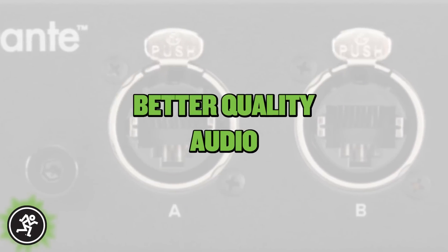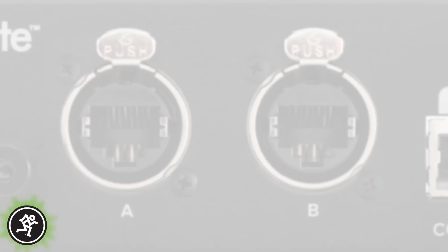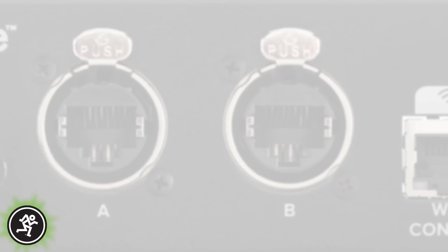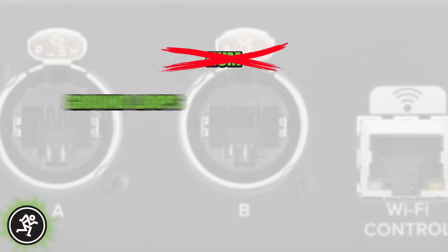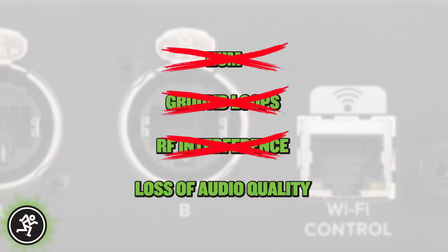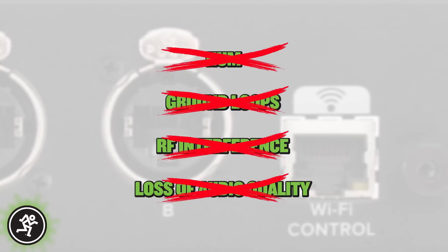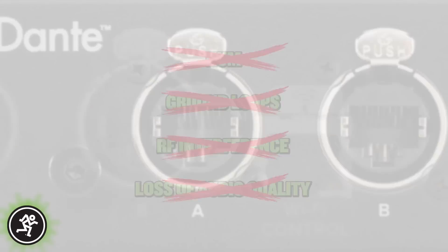First, Dante digital audio networks sound better, as networked audio doesn't suffer from hum, ground loops, RF interference, or loss of audio quality often associated with analog cable runs.